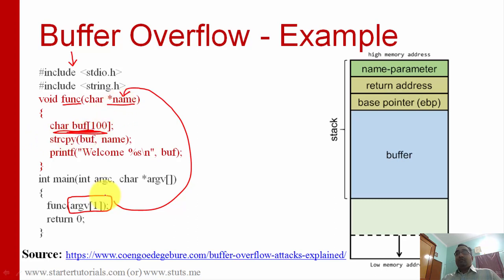Inside the function we are creating a character array which is named buff. This is our buffer of size 100. Whatever data I am giving here, I am copying it into buffer array, and finally I am printing that data. For example, if I give Ramesh here, it will print welcome Ramesh. This is a simple program.